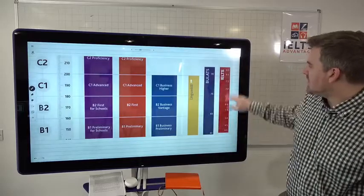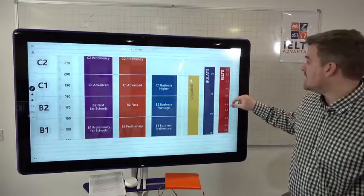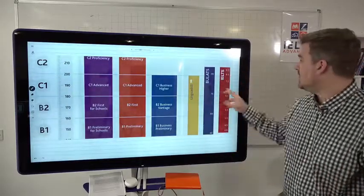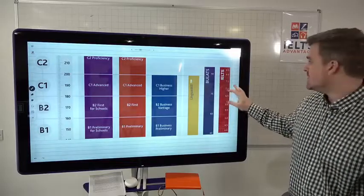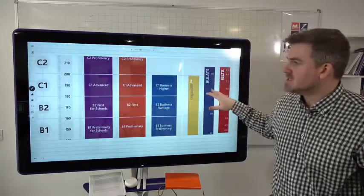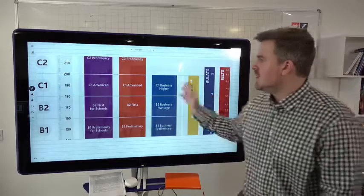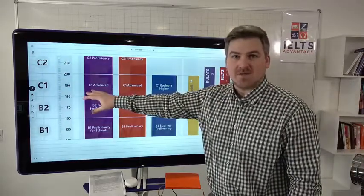And they are equivalent to different levels in IELTS. So most of you watching this video want a band 7, right? So band 7, according to this, this is from Cambridge, I believe, or the British Council, it's around a C1 level.